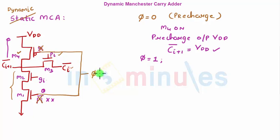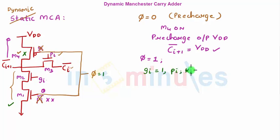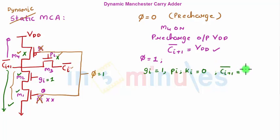When PHI equals one, M4 goes off and M1 turns on because it's an NMOS. Now we evaluate different values of G, P, and K. First case: GI equals one, so PI and KI are both zero. M2 is on (as is M1), M3 is off since PI is zero, so the output is pulled towards ground — CI+1 bar equals zero, meaning CI+1 equals one. When GI is one, we want Cout to be one, so functionality is achieved.